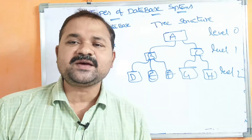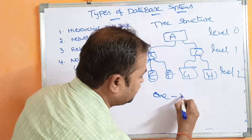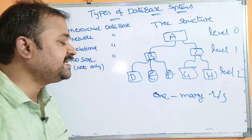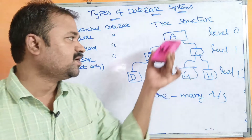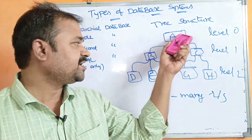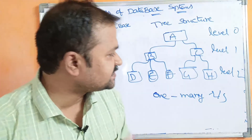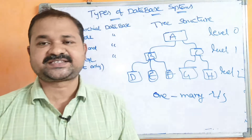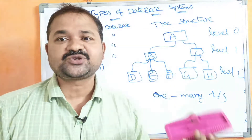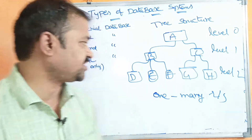Hierarchical database mainly establishes a one-to-many relationship, meaning one node can have many number of children. For example, node A has 2 children and node B has 3 children. It stores information level by level with the help of a tree structure.